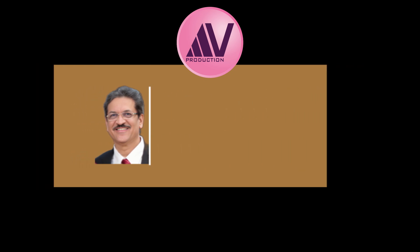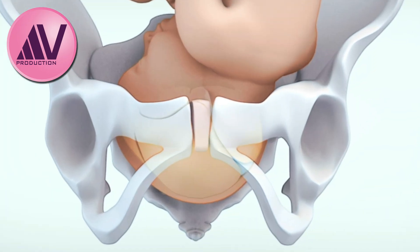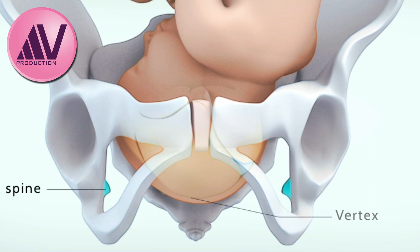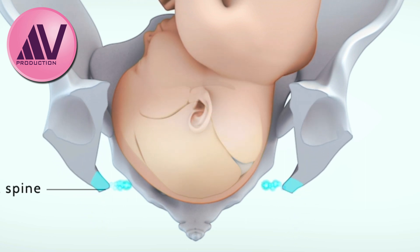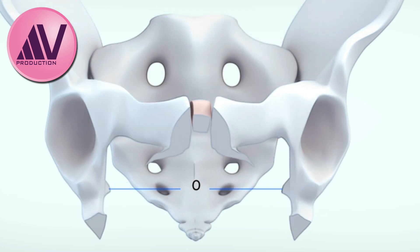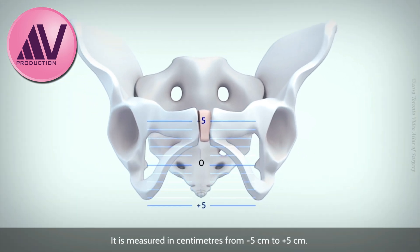Fetal station describes the relationship between the leading bony point of the vertex and a line between the maternal ischial spines, both in the midline. In modern obstetrics, it is measured in centimeters from minus 5 centimeters to plus 5 centimeters.